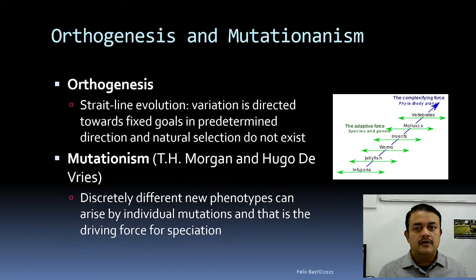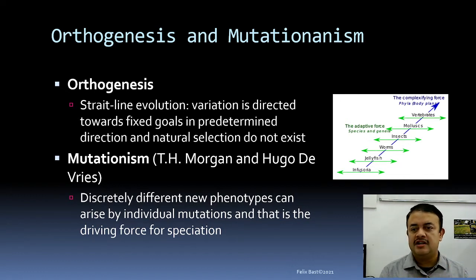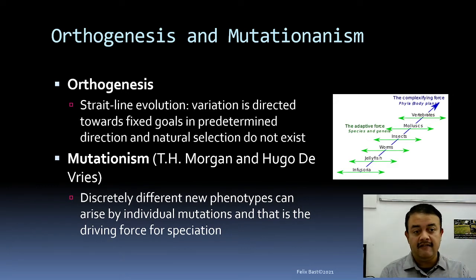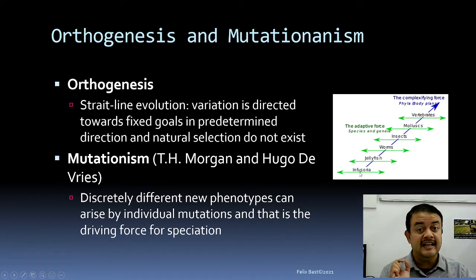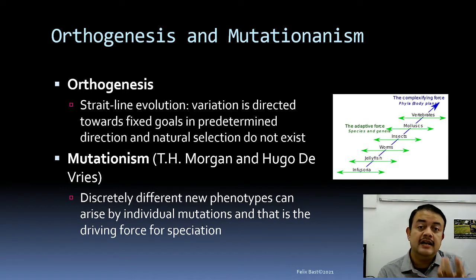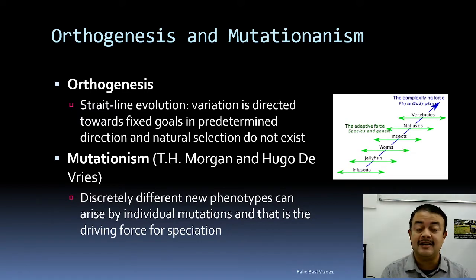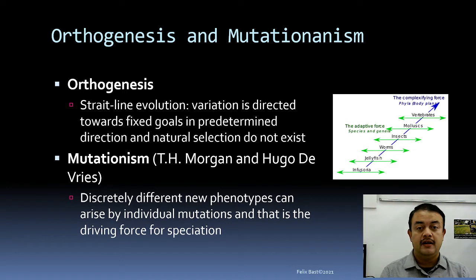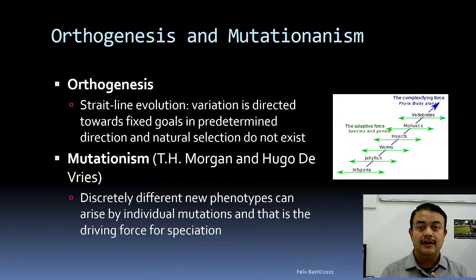The first concept is orthogenesis, a pre-Darwinian idea. It represents straight-line evolution — from the least complex organisms like bacteria to the most complex — as if evolution follows a predetermined direction. For example, bacteria turning into fish, fish into reptile. This is fallacious: the variation in orthogenesis is directed toward fixed goals in a predetermined direction, and natural selection is excluded.